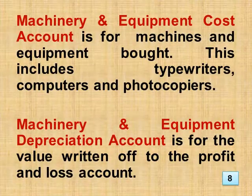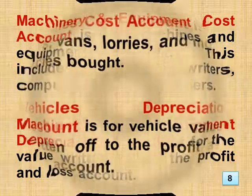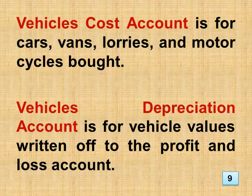Machinery and Equipment Cost Account is for machines and equipment bought, including typewriters, computers and photocopiers. Machinery and Equipment Depreciation Account is for the value written off to the profit and loss account. Vehicles Cost Account is for cars, vans, lorries and motorcycles bought. Vehicles Depreciation Account is for vehicle values written off to the profit and loss account.